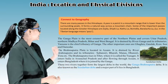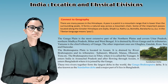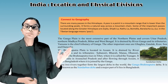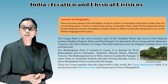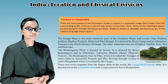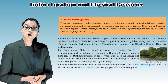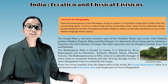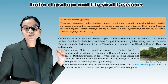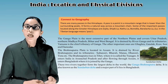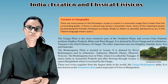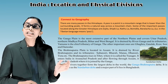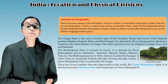Connect to geography: There are many passes in the Himalayas. A pass is a point in a mountain range that is lower than the surrounding peaks, forming a natural way across a mountain chain. Some important passes along the Greater Himalayas are Zojila, Shipkila, Nathu La, Banihal, and Baralacha La. In Tibetan, 'La' means pass.